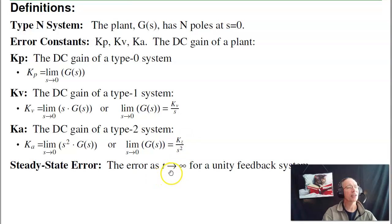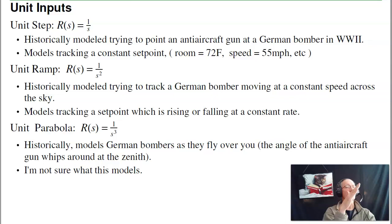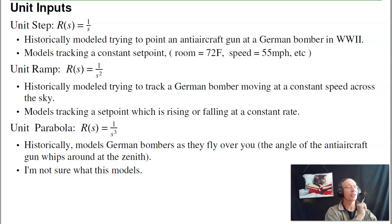The three input types are unit step, unit ramp, and unit parabola. The unit step actually dates back to World War II — the British were trying to shoot down German bombers flying over London. A step input represents the bomber hovering: can you point the anti-aircraft gun at it without gravity pulling it down? That still makes sense today — quite a few things are constants, like wanting the room temperature to be 72 degrees or car speed to be 55 miles an hour. Step responses are very common and usually how you specify a system.